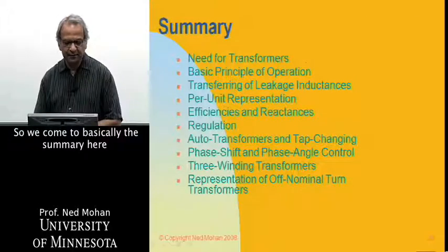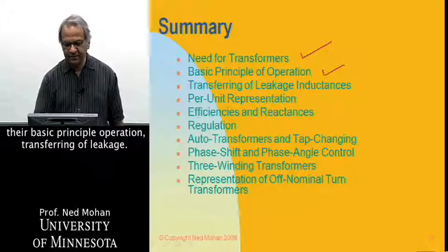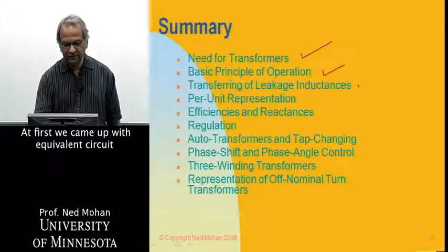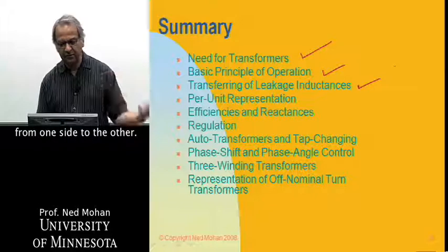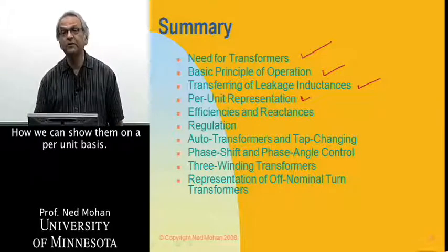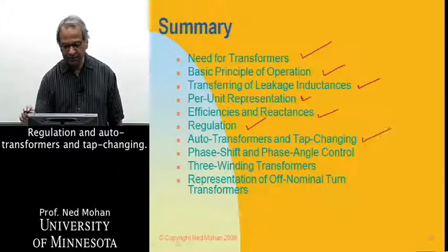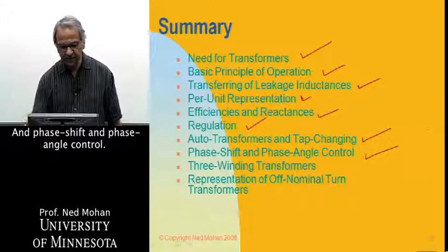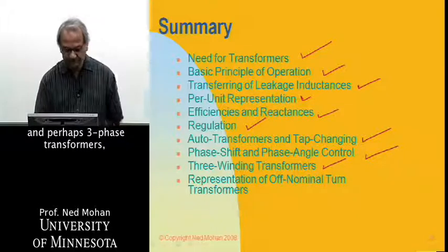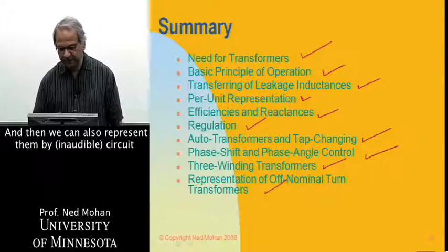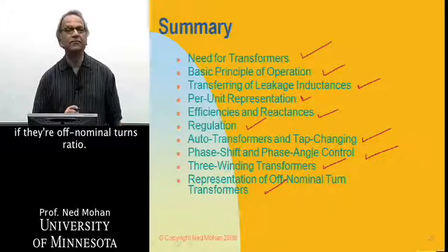So we come to basically the summary here where we have seen the need for transformers, their basic principle of operation, transferring of leakage. First, we came up with the equivalent circuit, and then how we can transfer leakage inductances from one side to the other, how we can show them on a per-unit basis, and their efficiencies and reactances, the regulation, and autotransformers and tap changing, and phase shift and phase angle control, and also three winding transformers, and perhaps three-phase transformers, which I just mentioned, and then we can also represent them by a pi circuit if they have off-nominal turns ratio. Thank you very much.